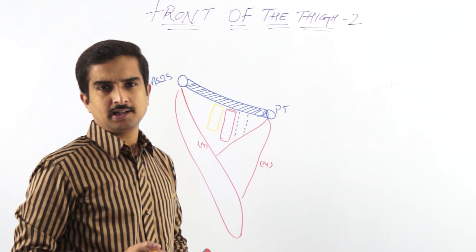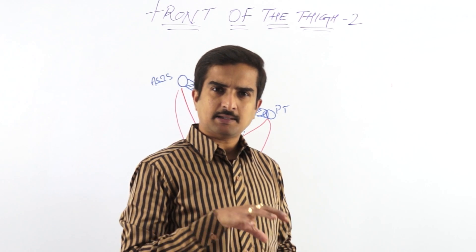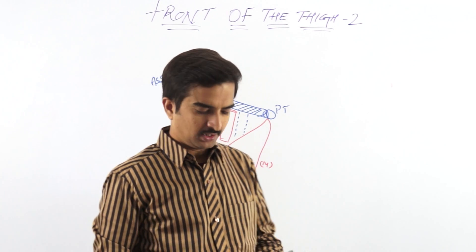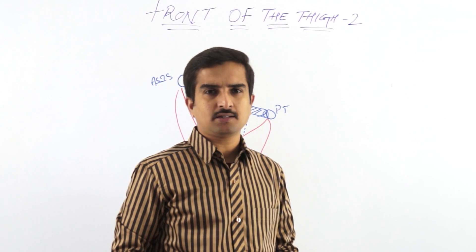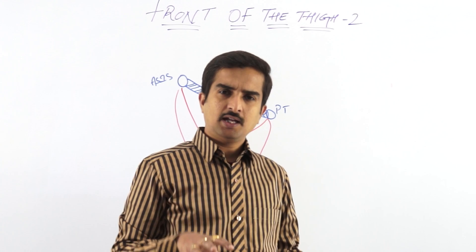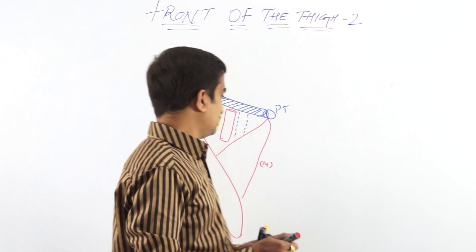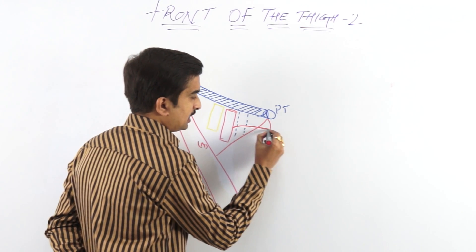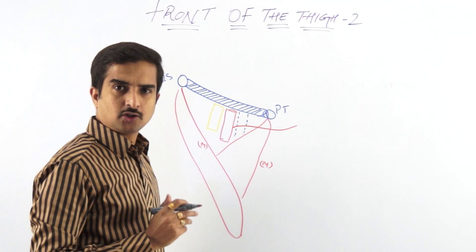From the femoral triangle, the cutaneous arteries supply the front of the thigh. There are totally three cutaneous arteries seen at the front of the thigh, and all are branches of the femoral artery. The first one is called the superficial external pudendal artery.